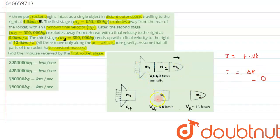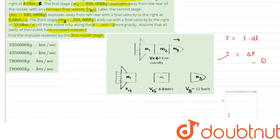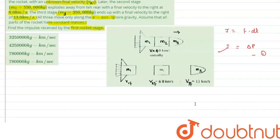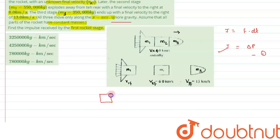To calculate the impulse, we need the final and initial momentum of the first stage rocket. To find the change in momentum, we conserve momentum along the x-direction since there is no external force acting on the system and gravity is ignored. For the first part, we consider the moment when m1 is just detached from the rocket, while m2 and m3 were moving together.